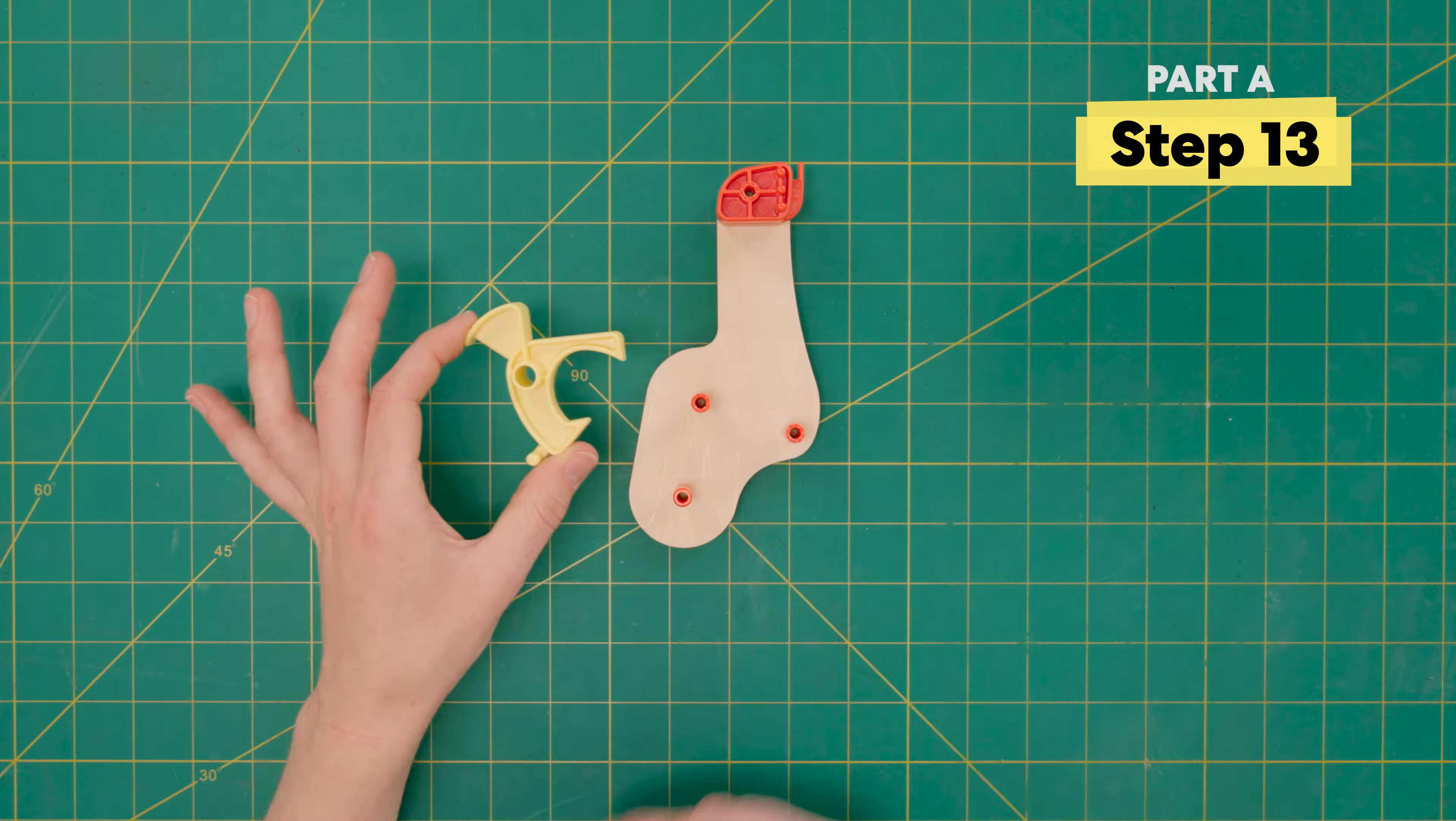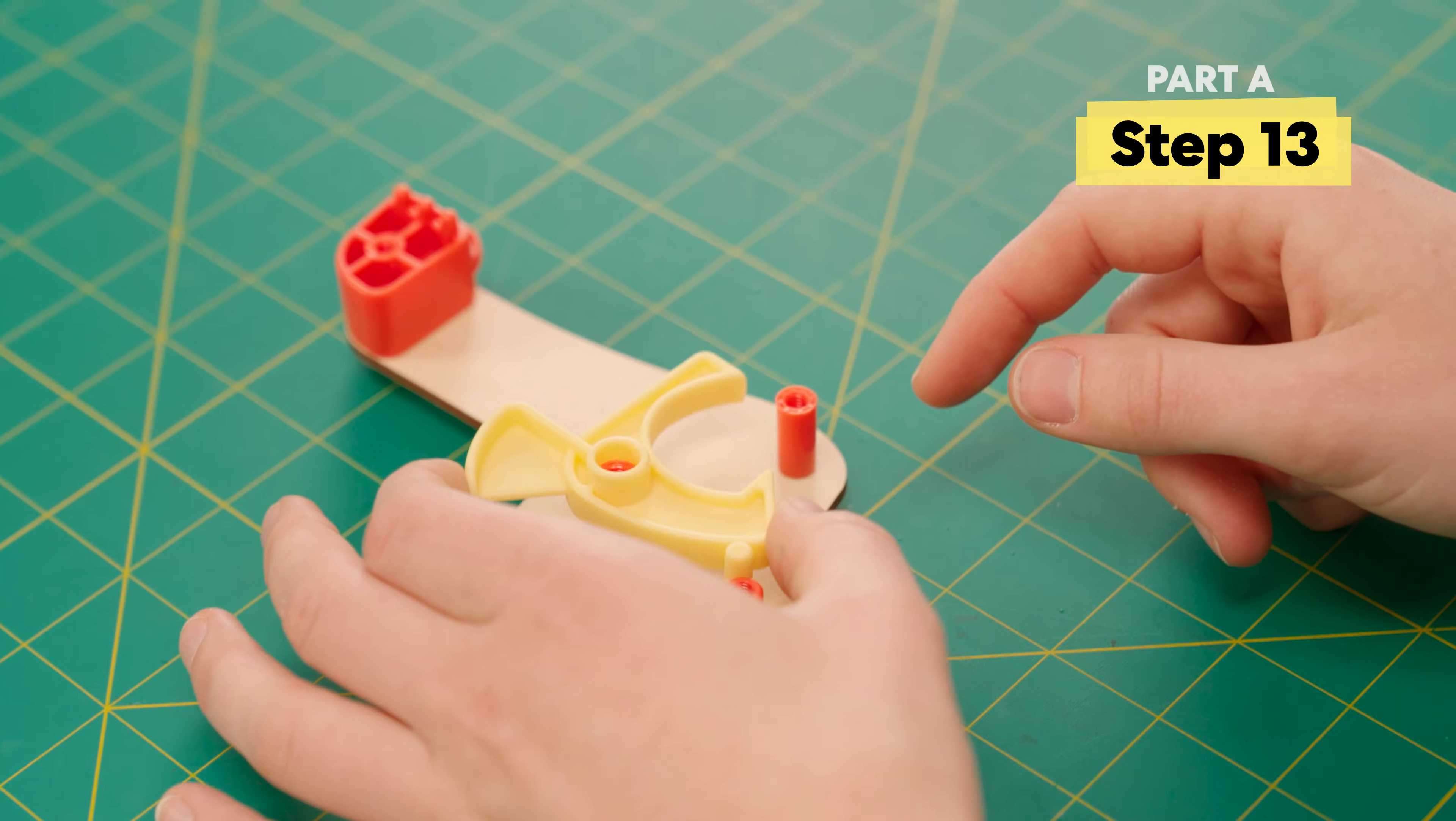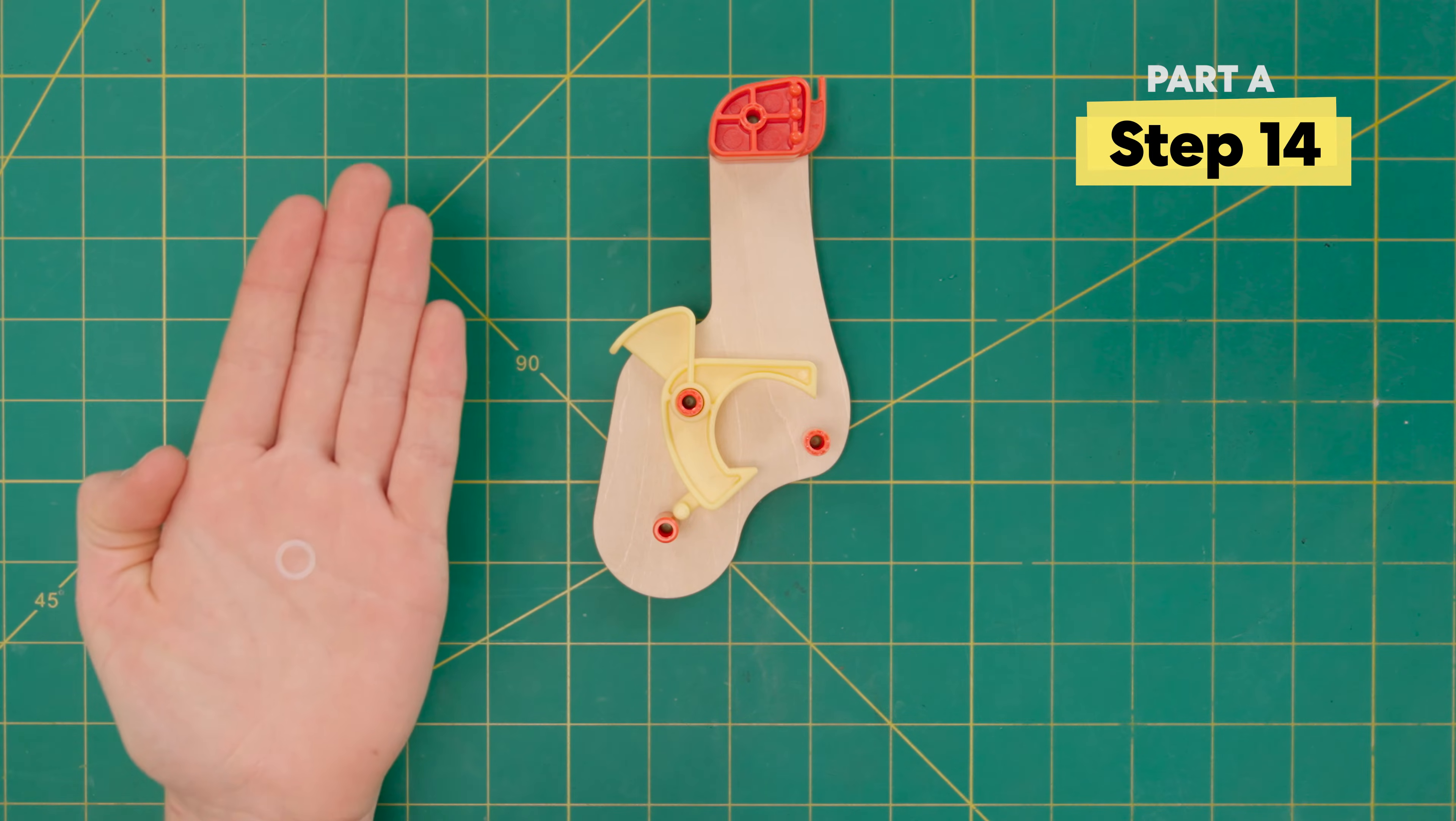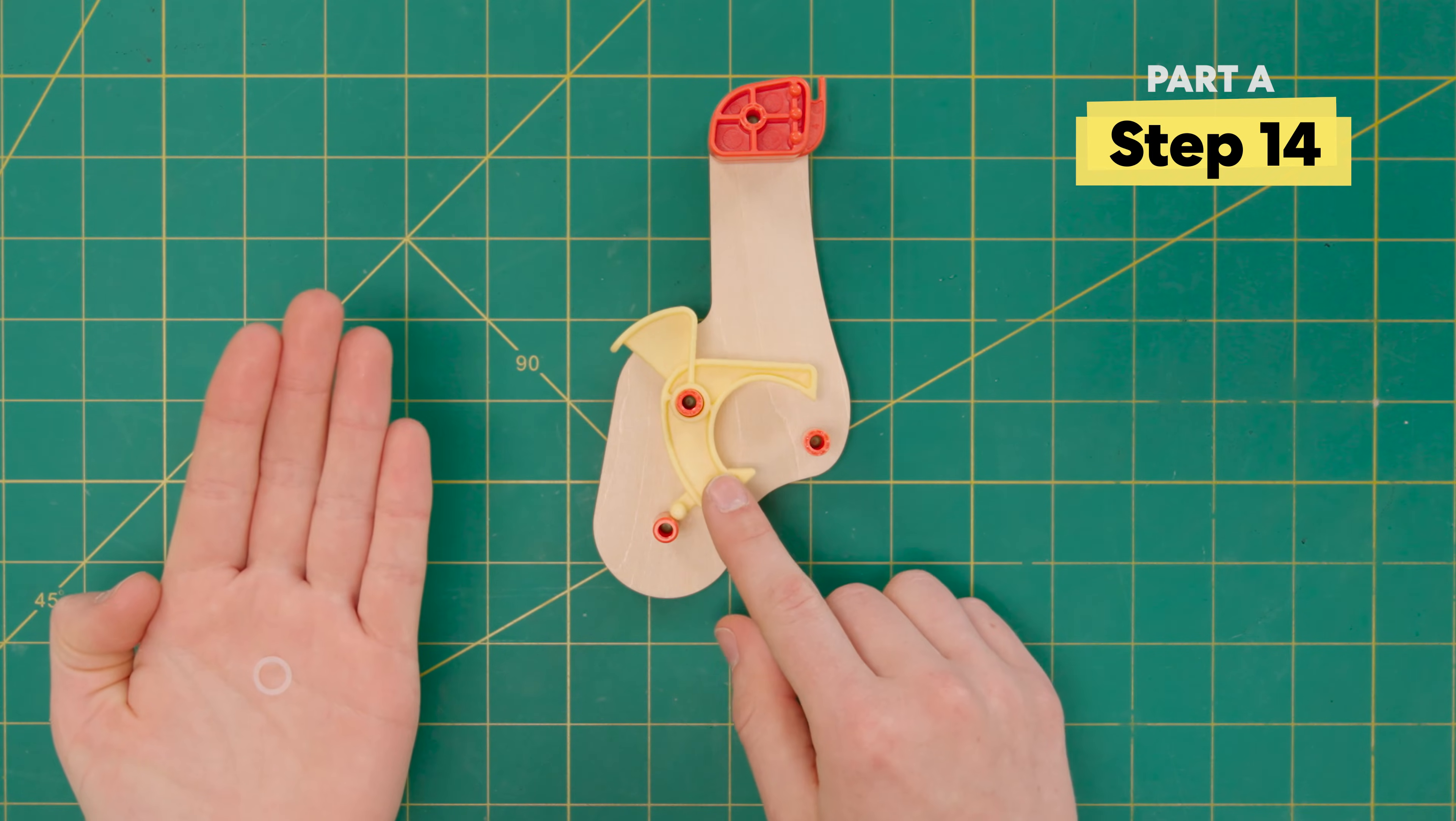Next, find your left trigger and place it on this spacer right here. Use another o-ring to secure the trigger to this spacer.